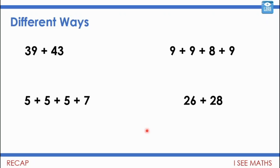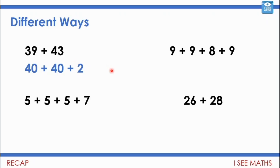I'm going to give you some suggestions — it might not be what you actually did. For 39 plus 43, I would just double 40 to get 80, and then think how much more I need. That's one less, so if I take 1 from the 43 to make it 40 and then add the remaining 2, in total it'll be 82.